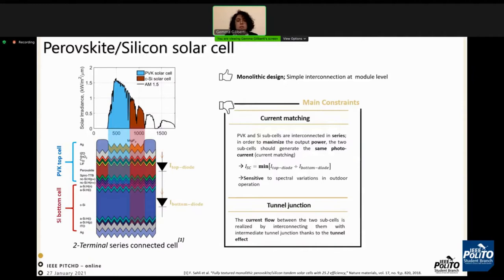Due to current matching, this kind of solar cell is sensitive to spectral variations in outdoor operations. The other constraint is that this solar cell needs a tunnel junction to generate current flow between the two subcells. In order to overcome this limitation, we can exploit the multi-terminal approach.